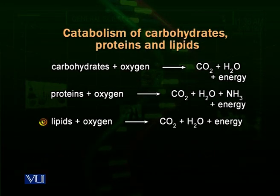Energy is useful for the body — it is utilized for anabolic reactions and all body functions. But carbon dioxide, water, and ammonia are produced in all three reactions — with carbohydrates, proteins, and lipids. These three waste products keep producing, and if they are not removed, they will accumulate inside the body.